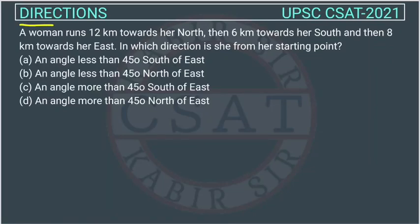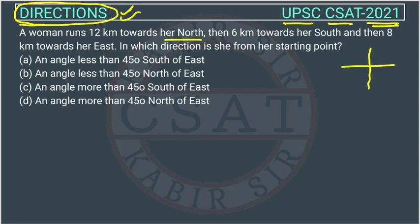This is a question of reasoning from the direction chapter, asked by UPSC in the CSAT paper of 2021. A woman runs 12 km towards her north. Whenever we have a direction question, we should draw the directions. So she is going north — this is 12 km towards her north.